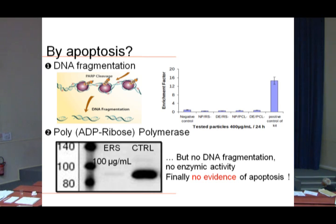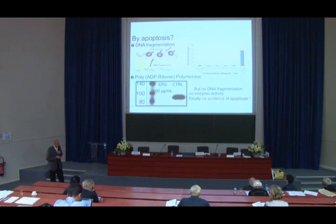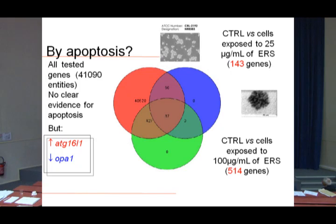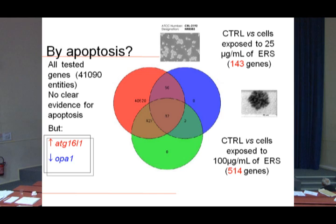We then performed transcriptomic studies at two doses — one low and one high. We identified a number of differentially expressed genes, and found no genes associated with apoptosis. Instead, we found two interesting genes: ATG-16L1 and OPA1 — optic atrophy 1 — which was also mentioned by George.